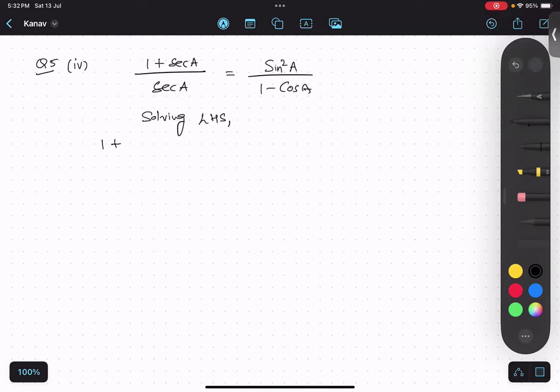1 plus sec can be converted into cos, which is 1 upon 1 upon cos. As you can see, there are 4 lines. 1, 2, 3 and 4. Can you see that? 4 lines. Whenever there are 4 lines, I like to write it as a division.